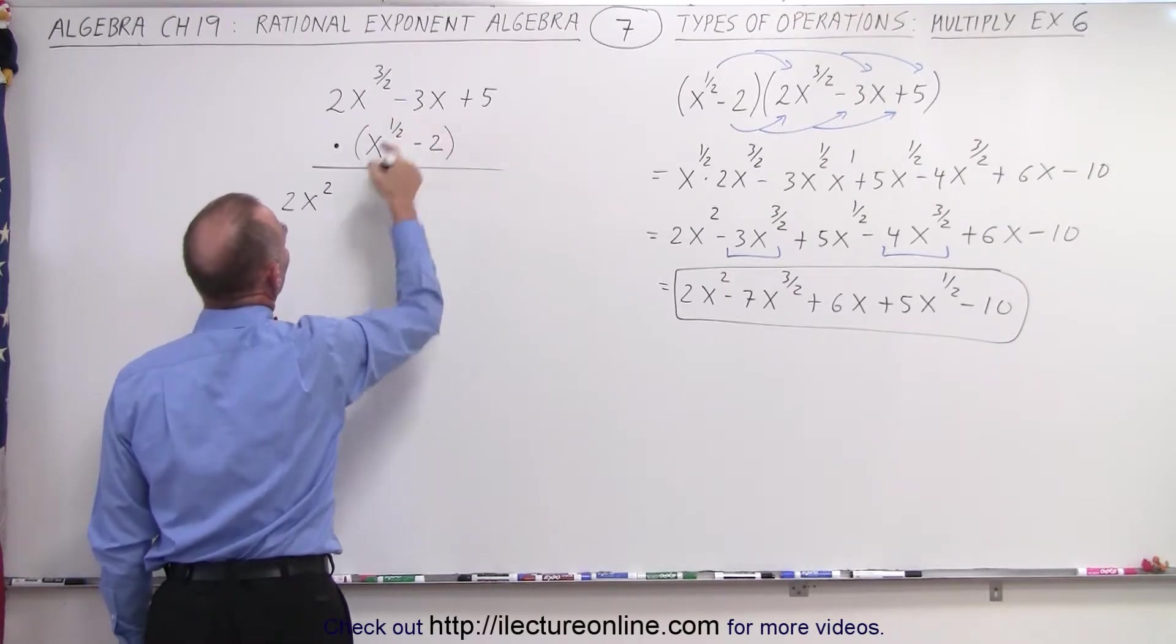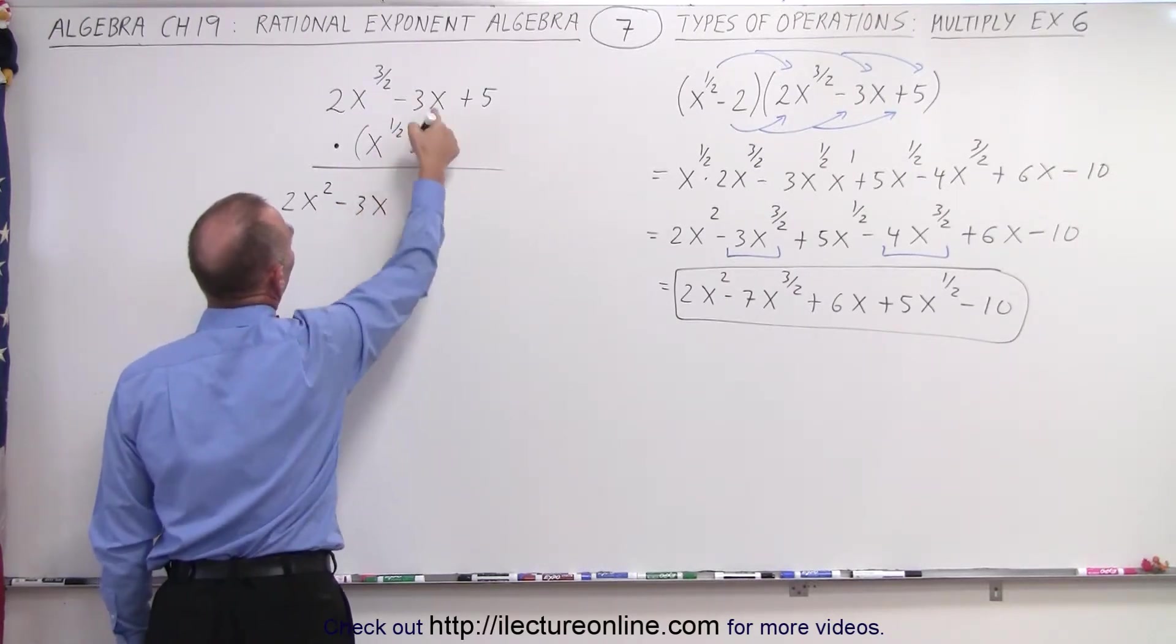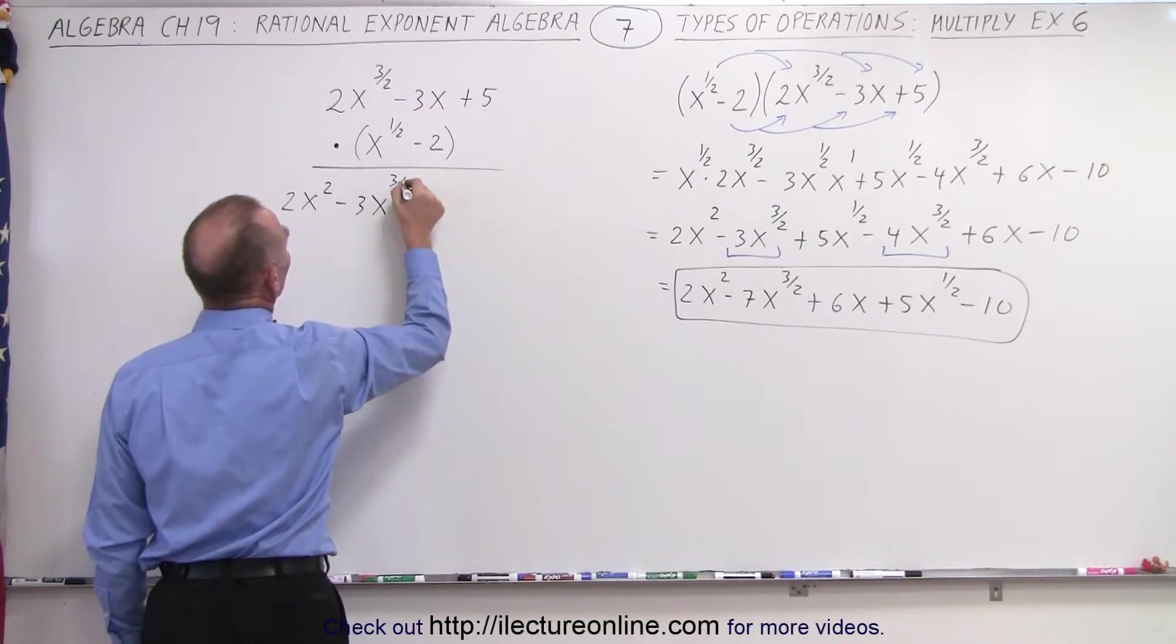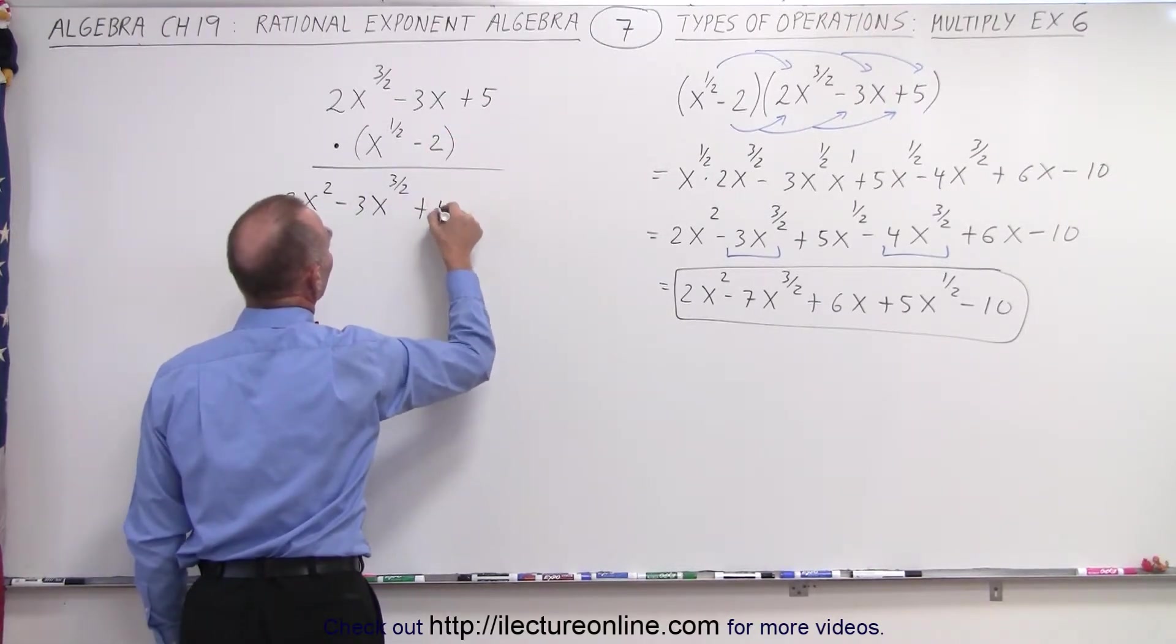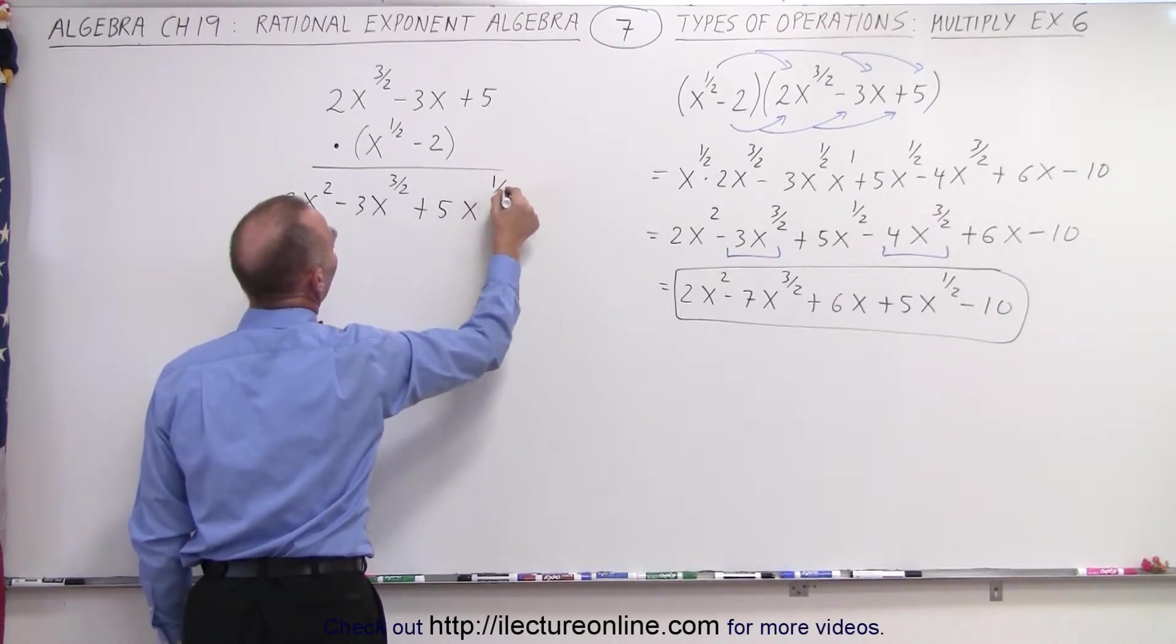This times this gives us minus 3x to the 1 half, plus 1, which is 3 halves. x to the 1 half times the plus 5, which is plus 5x to the 1 half.